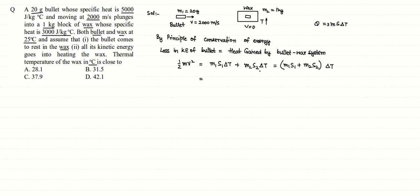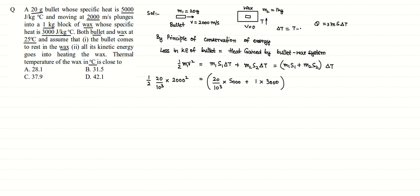Filling in the values: on the left side, half into 20/1000 into 2000 squared. On the right side, mass of bullet is 20/1000 kg, specific heat of bullet is 5000, plus mass of wax is 1 kg, specific heat of wax is 3000, all multiplied by ΔT. Initially both bullet and wax are at 25 degrees Celsius and the final temperature is T, so ΔT equals T minus 25 degrees Celsius.